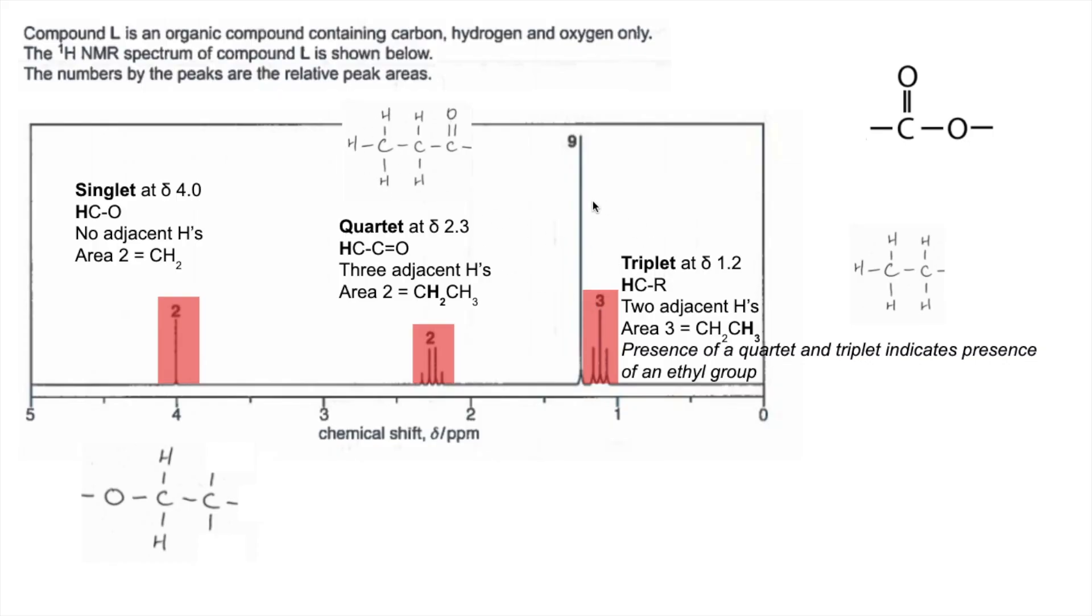So the final peak, this big tall one here with the area of 9, that's also a singlet. It's an HCR environment. There's no adjacent hydrogens, that's why it's coming out as a singlet. But the area of 9 means there must be 3 equivalent CH₃ groups.